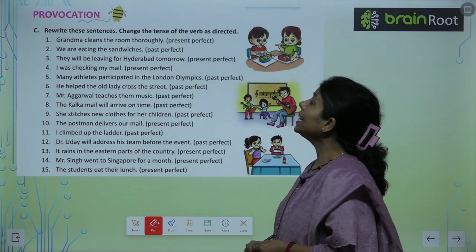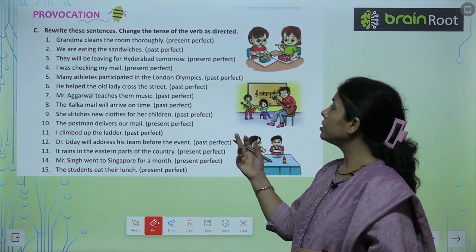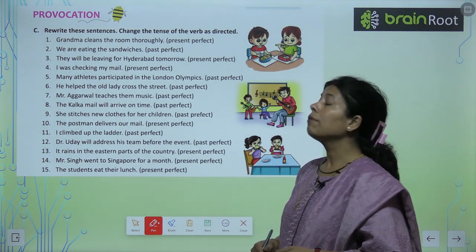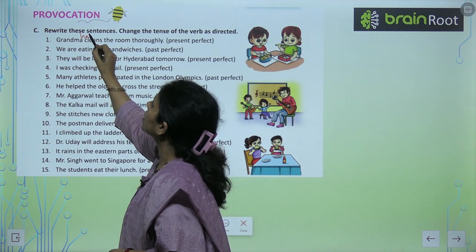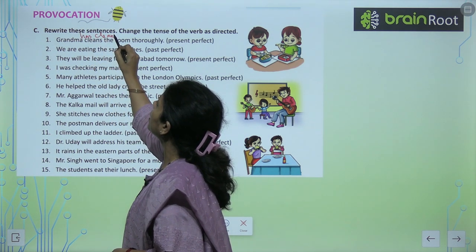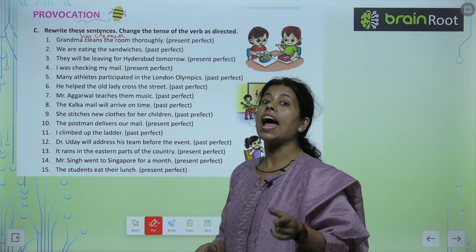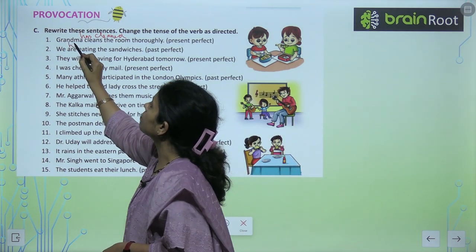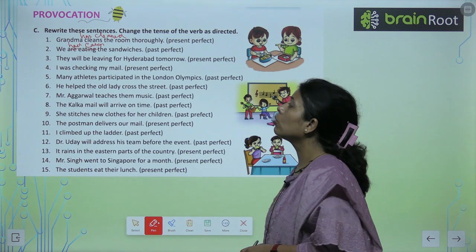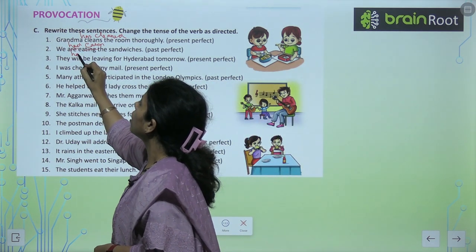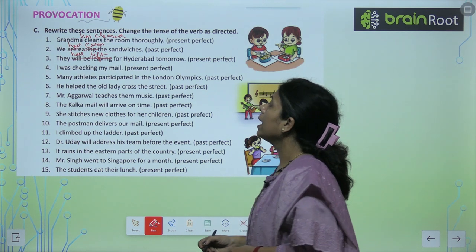Rewrite these sentences — change the tense of the verb as directed. 'Grandma cleans the room thoroughly' — present perfect mein: Grandma has cleaned the room thoroughly. 'We are eating the sandwiches' — We had eaten the sandwiches. 'They will be leaving for Hyderabad tomorrow' — They have left for Hyderabad.